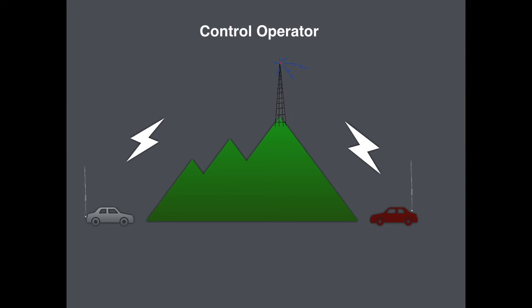For example, if the car on the left pushes their push-to-talk, it will open the repeater and transmit to the vehicle on the right. So the person on the left will be the control operator. And if the person on the right replies, they would be the control operator during the time that they have it keyed.